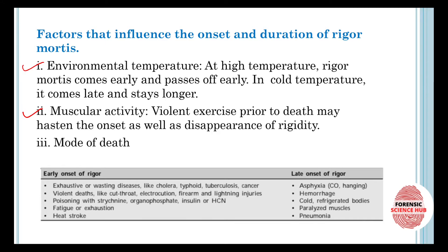The first factor is environmental temperature. At higher temperatures, rigor mortis comes early and passes off early. Rigor mortis starts, stays for a certain time, and then goes off. In the case of higher temperatures, it comes early compared to the normal temperature time duration and it is going to pass off early as well.